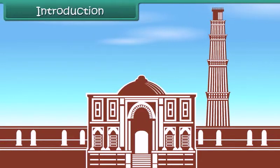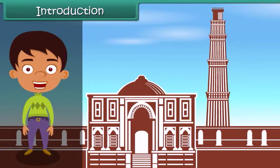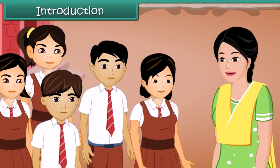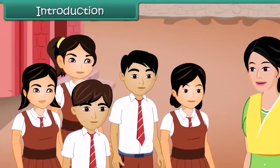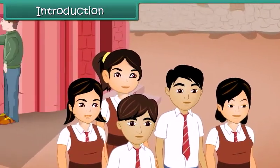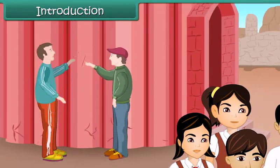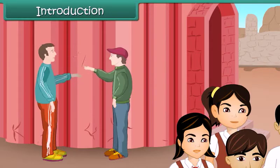An educational tour to Qutub Minar has been organized by Droof School. The history teacher Latamam takes the students around and tells them interesting details about the monument. Their attention is diverted by the laughter of some boys from another school. They turn around and find them scribbling their names on the walls.